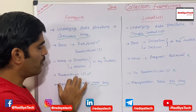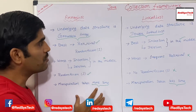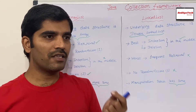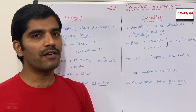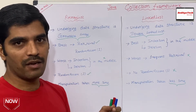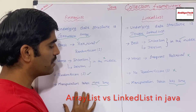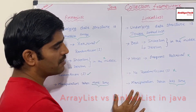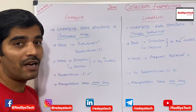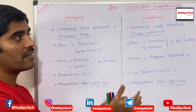Because LinkedList doesn't implement RandomAccess, manipulation takes more time in terms of ArrayList — since adding or removing a single element causes the entire list to shift. So because of that, manipulation takes more time in ArrayList. But in case of LinkedList, manipulation takes less time. These are the main points about the difference between ArrayList and LinkedList.